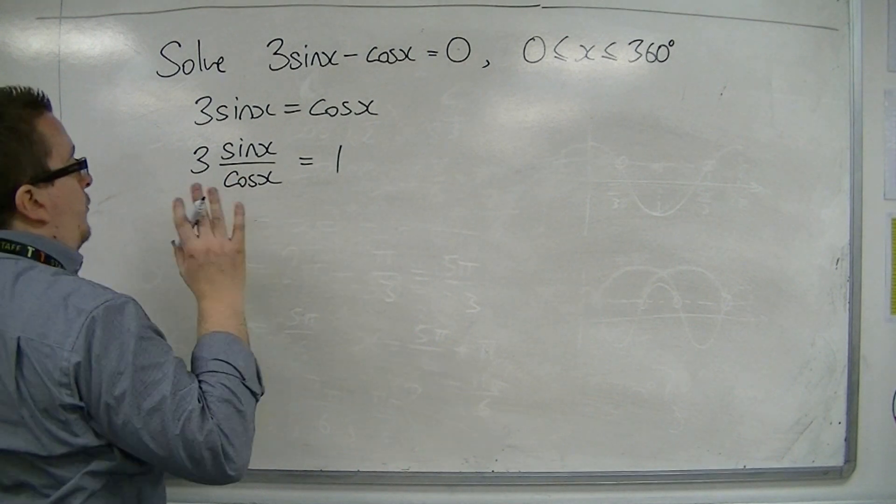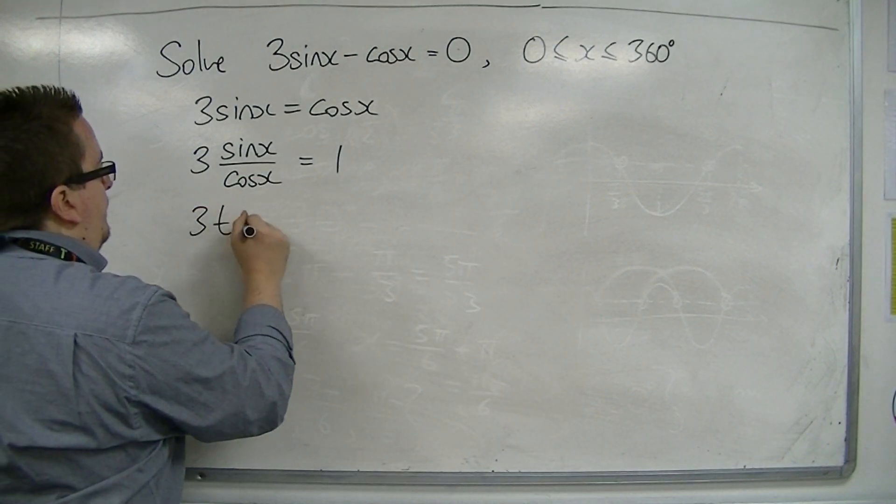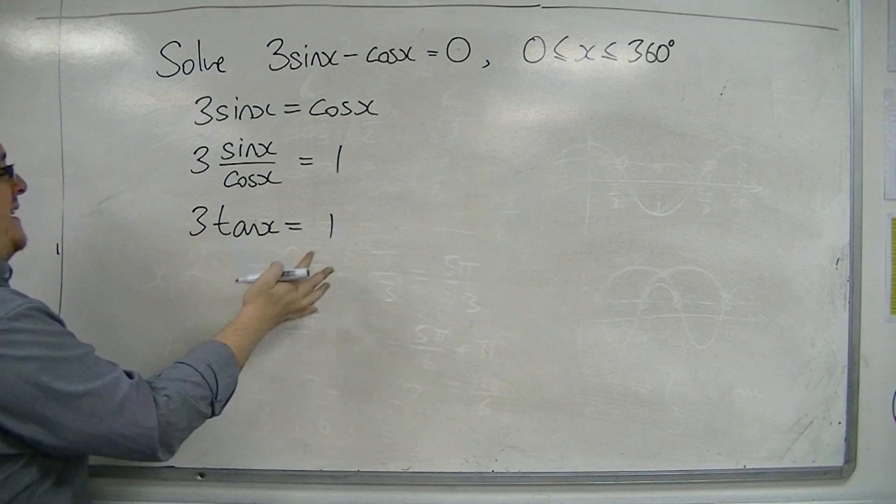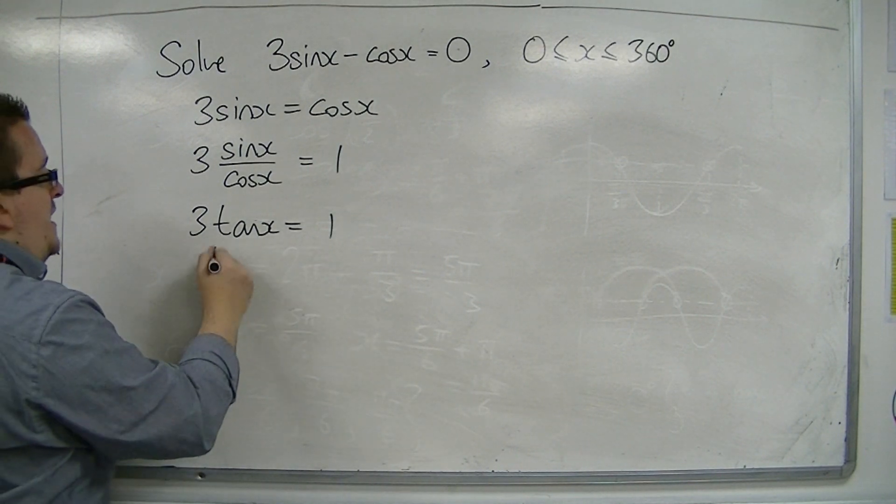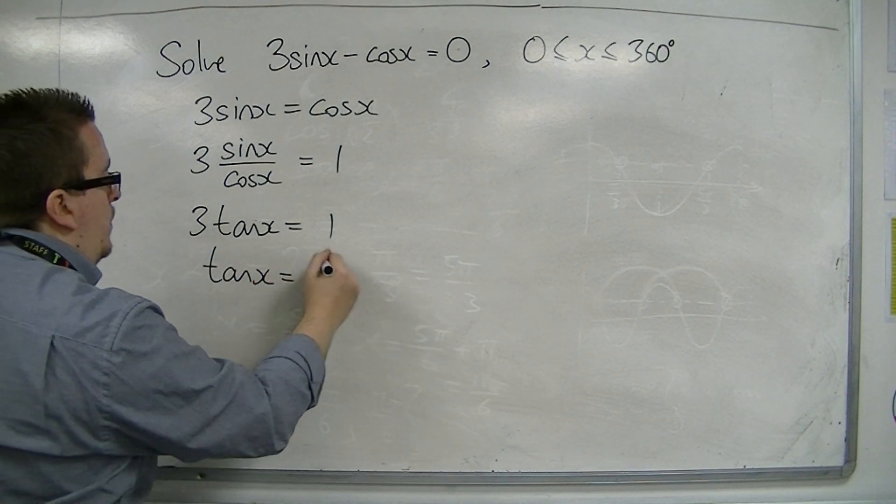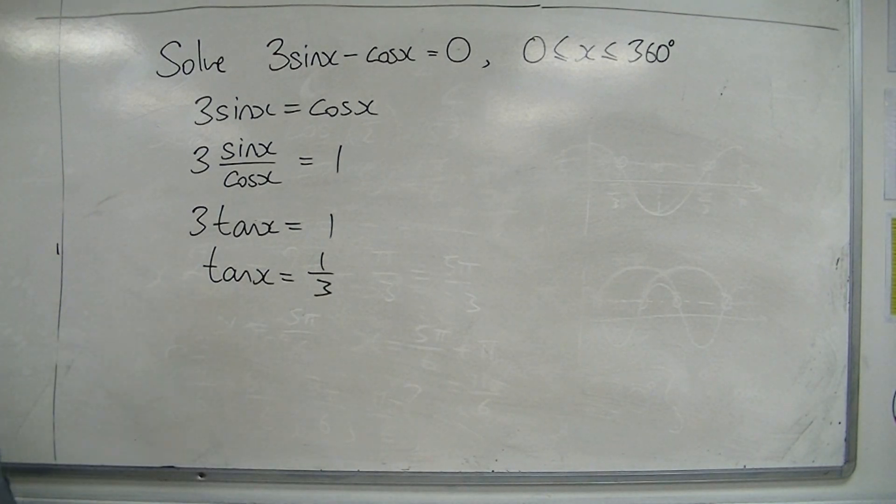Now sine over cos we know is tan. So I've got it now to 3tan(x) equals 1, and then divide both sides by 3. So tan(x) equals 1/3.